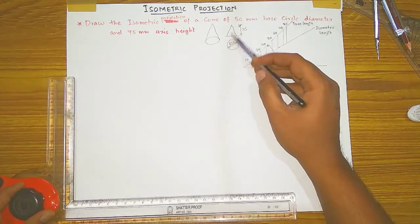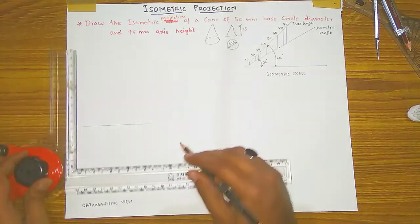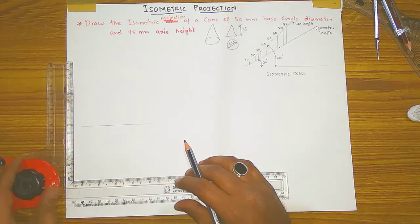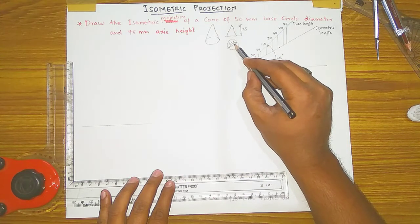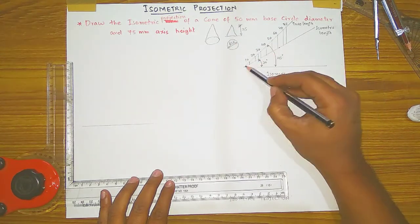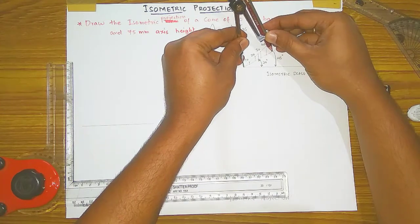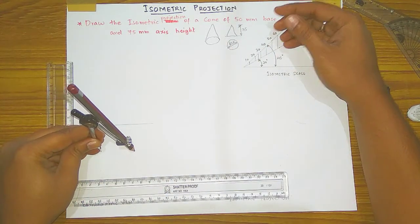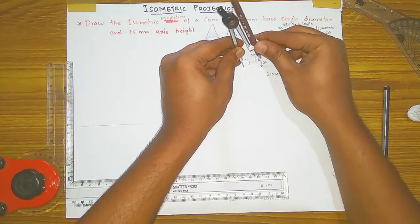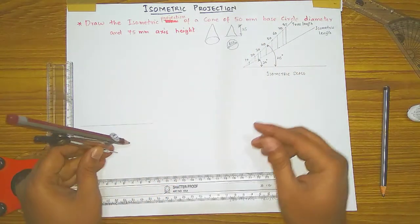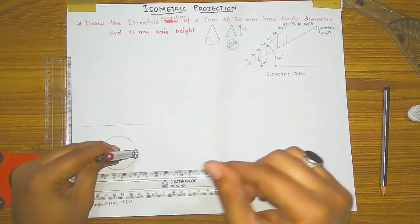So first we have to draw the orthographic view. To draw it, first take a normal line. To draw the circle, the question gives 50 mm, but we have to take the isometric scale 50 mm length to draw the circle. The diameter is 50 mm, so half will be 25 mm. Adjust your divider to 25 mm on the isometric scale, then draw the circle with that isometric length dimension.